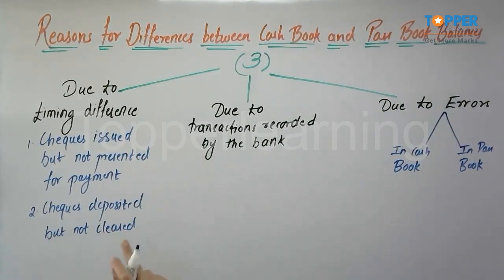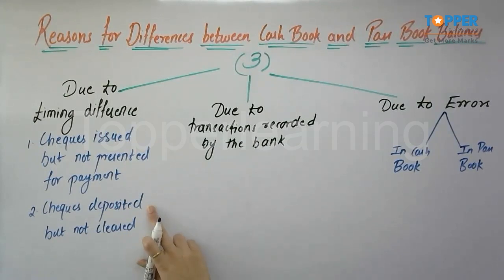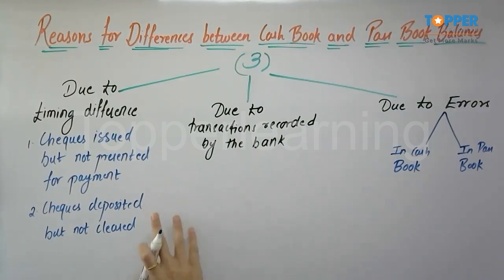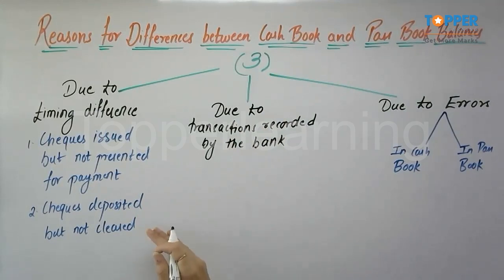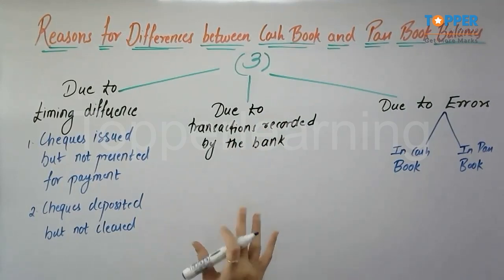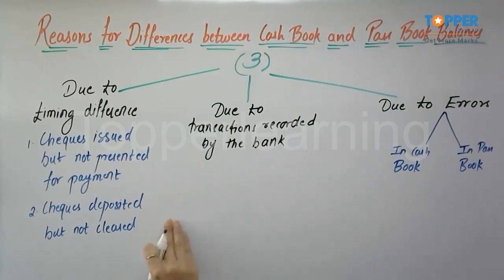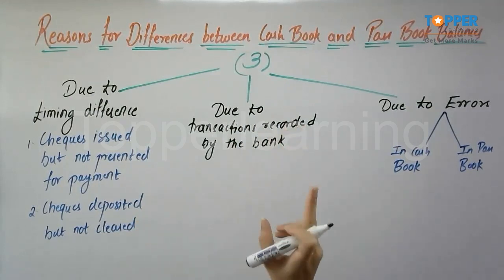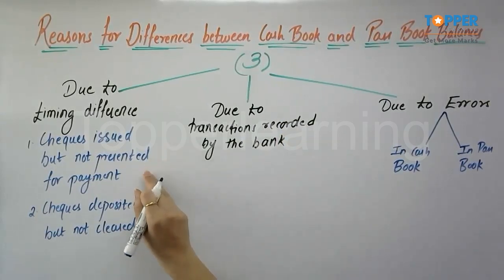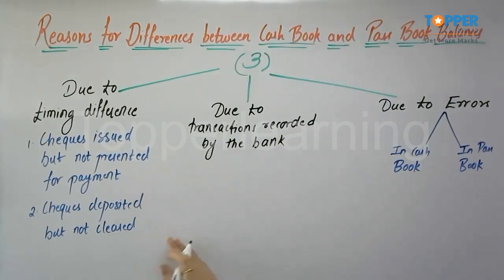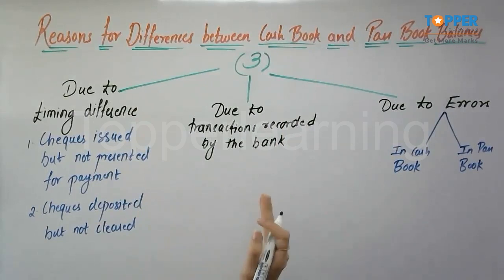When checks are deposited but not cleared, the date on which a check is deposited and the date on which the check gets cleared are different. Whenever the check is deposited, it is recorded in the cash book, but the bank records it only when the payment is received and the check is cleared. Because of this difference in timing, the cash book and passbook balance will not match. These are transactions recorded in both books but on different dates.